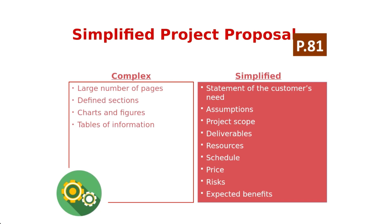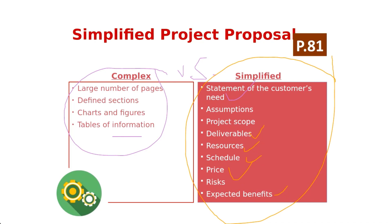On page 81 you will see a simplified project proposal. There are two types of project proposals: the more common full proposal — often hundreds of pages with charts, figures, tables, and many sections, generally for massive engineering projects — and a simplified project proposal, which includes the customer statement of need, assumptions, deliverables, resources required, schedule, price, risks, and expected benefits. This simplified format is also the format required in your assignment, so when you approach your assignment this is the structure your lecturers will be looking for.